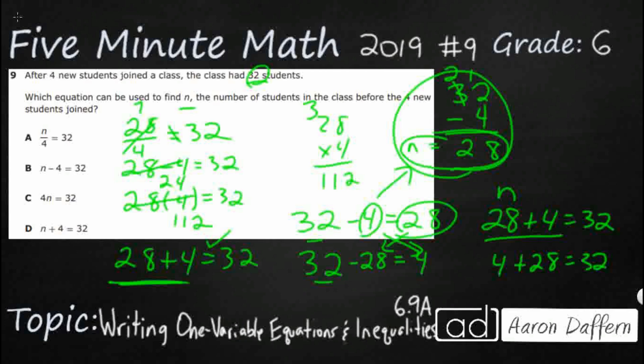After 4 new students joined. So 4 new students joined. Joined is definitely an addition right there. So we're going to say plus 4. The class had. So there's your equal sign right there. 32. And what we'll be looking for originally is N. So you can do that. Either way, your answer is D.